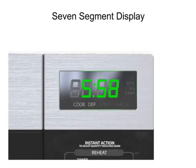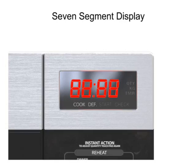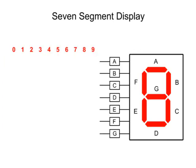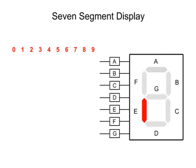Each of the four single seven-segment displays is composed of LEDs that can be selectively activated to display digits from 1 to 9. Let's look at a single seven-segment LED display. Each of the segments, A through G, contains a separate LED which can be controlled individually.